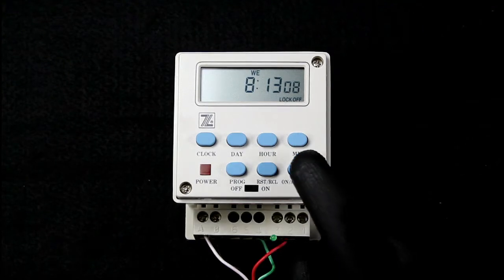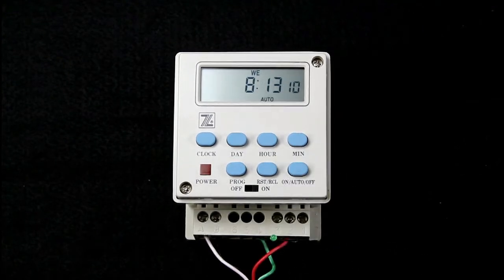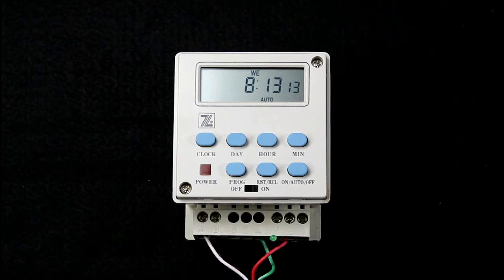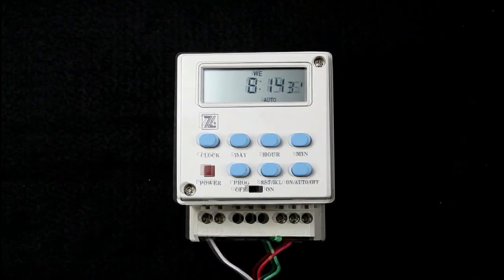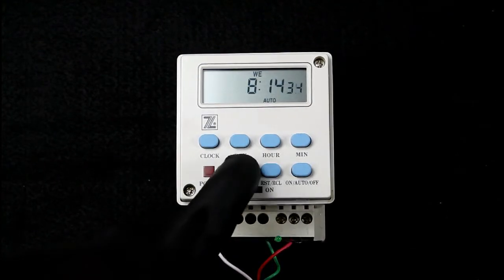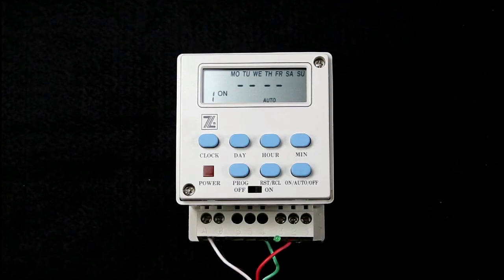If it is changed to auto, the relay will turn on at the next programmed cycle. Let's go over the functions of the timer. I'll press the program button to enter the programming section of the timer. This is the time to activate the relay. It is blank because nothing has been entered.